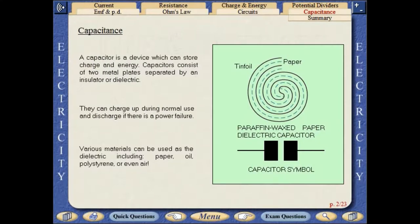A capacitor is a device which can store charge and energy. Capacitors consist of two metal plates separated by an insulator or dielectric. They can charge up during normal use and discharge if there is a power failure.